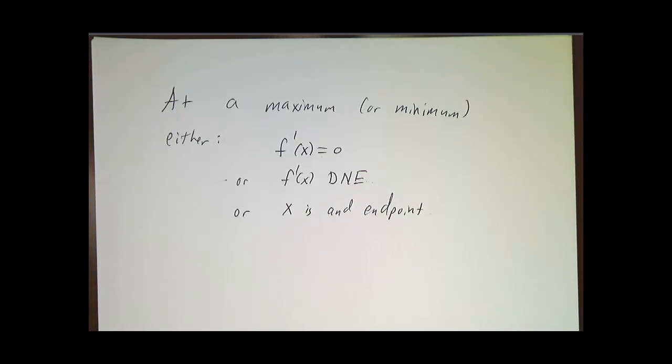So for all sorts of optimization problems in the real world — what's the best way to do something, or what's the worst way to do something — take a derivative and set it equal to 0.